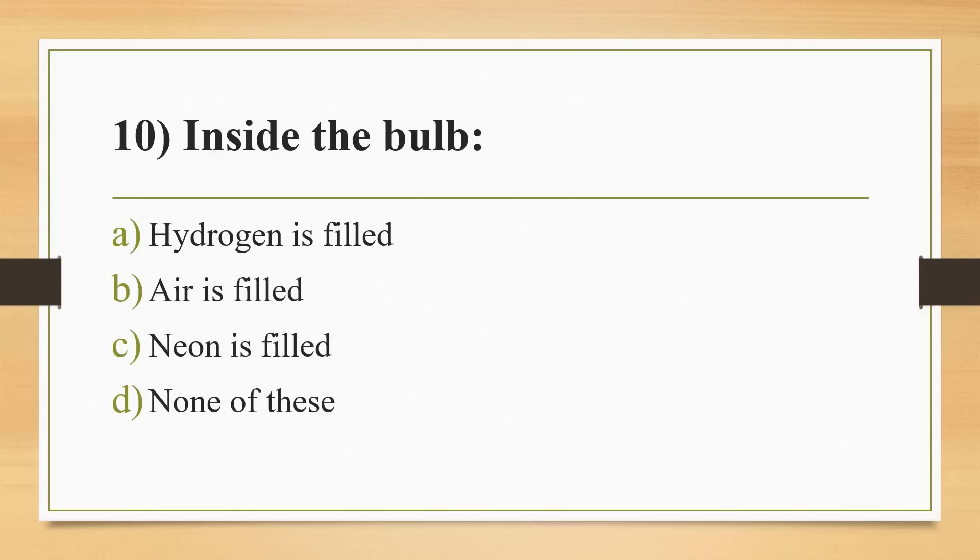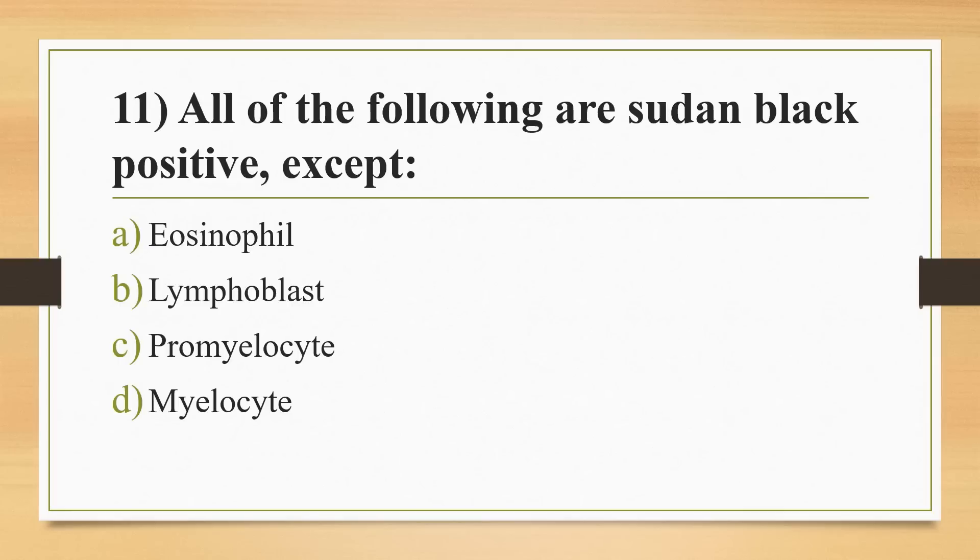Tenth question: inside the bulb? Options: hydrogen is filled, air is filled, neon is filled, or none of these. Answer is Option C, neon is filled. Eleventh question: all of the following are Sudan black positive except? Options: eosinophil, lymphoblast, promyelocyte, or myelocyte. Answer is Option B, lymphoblast.